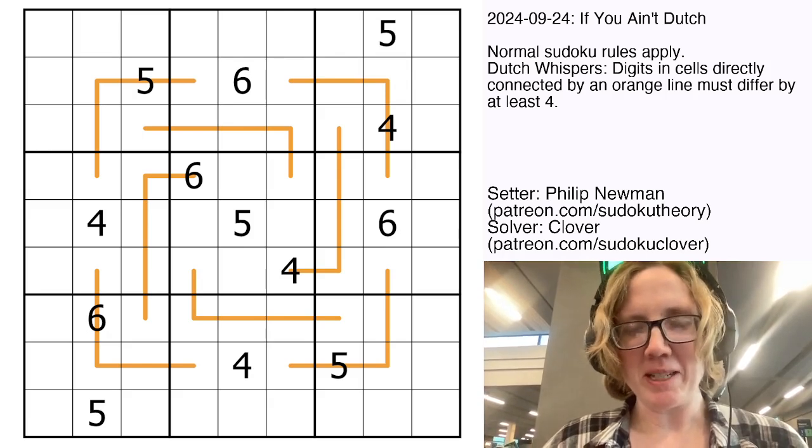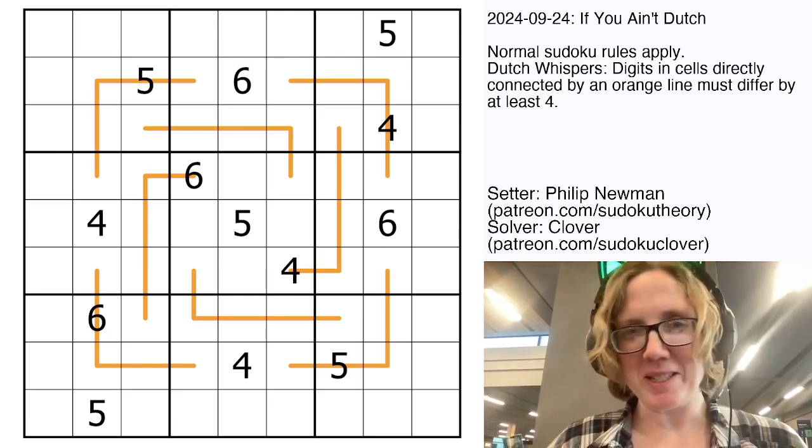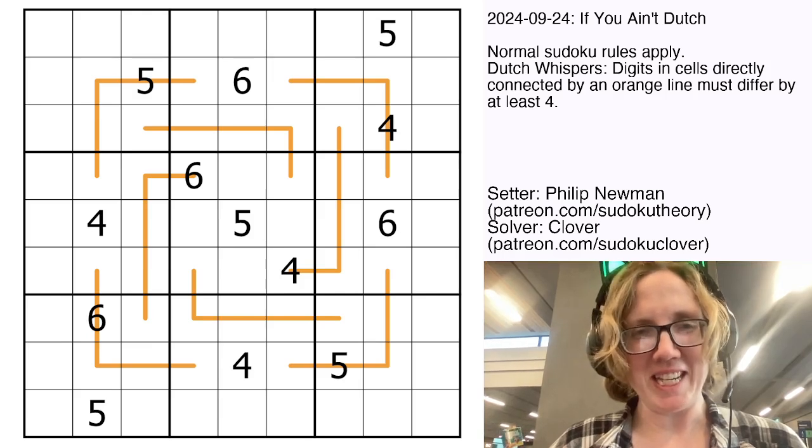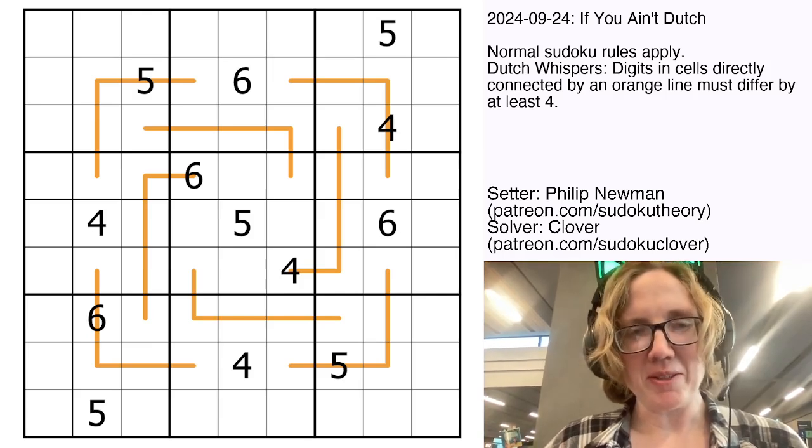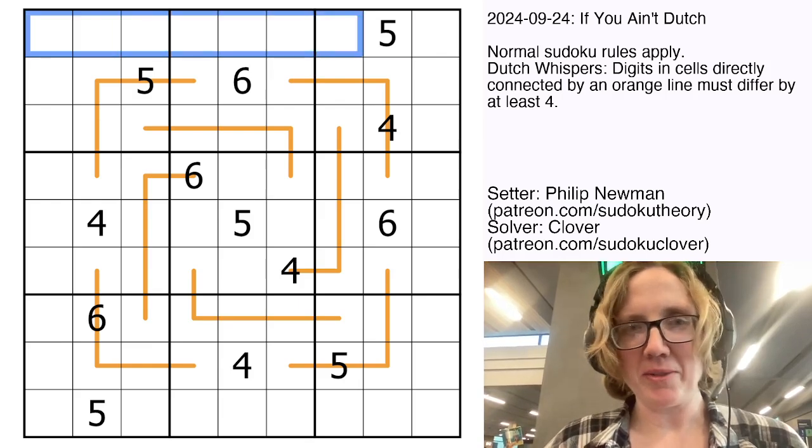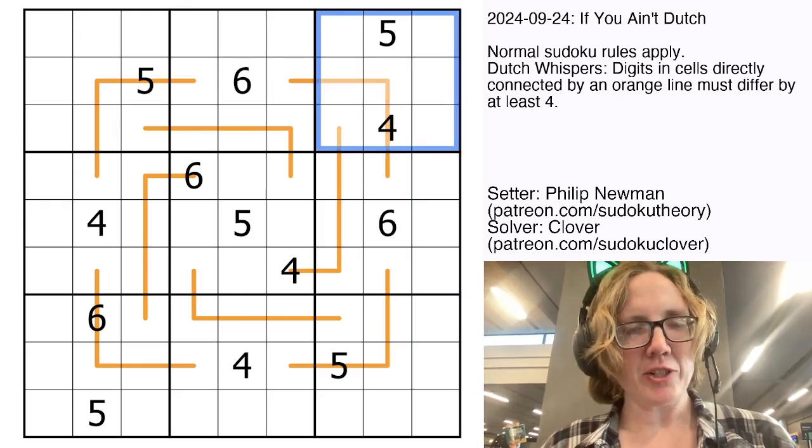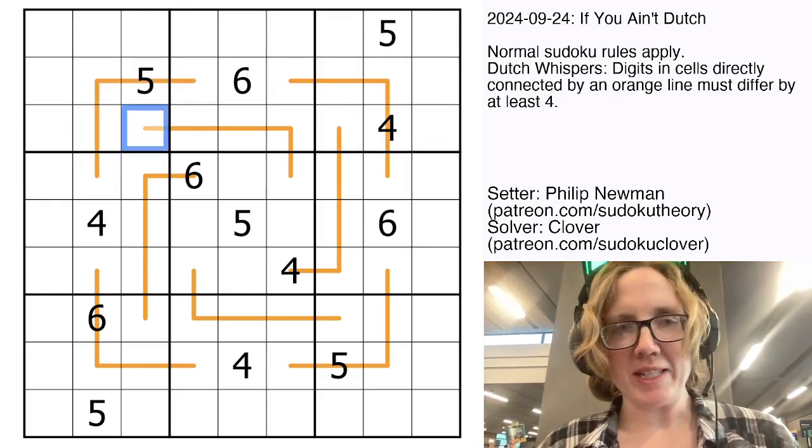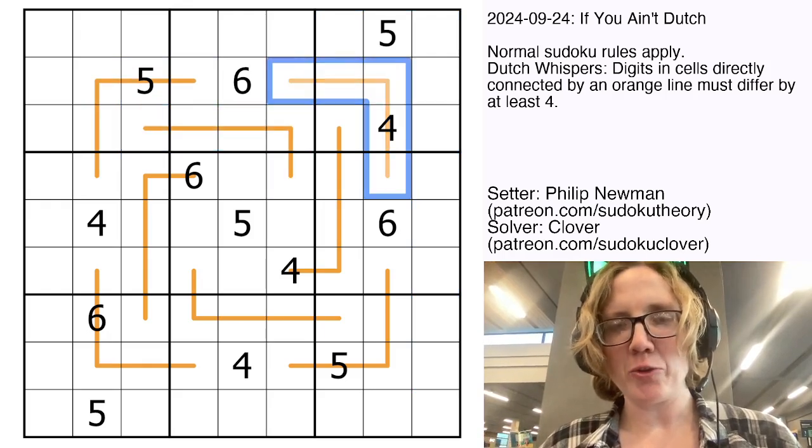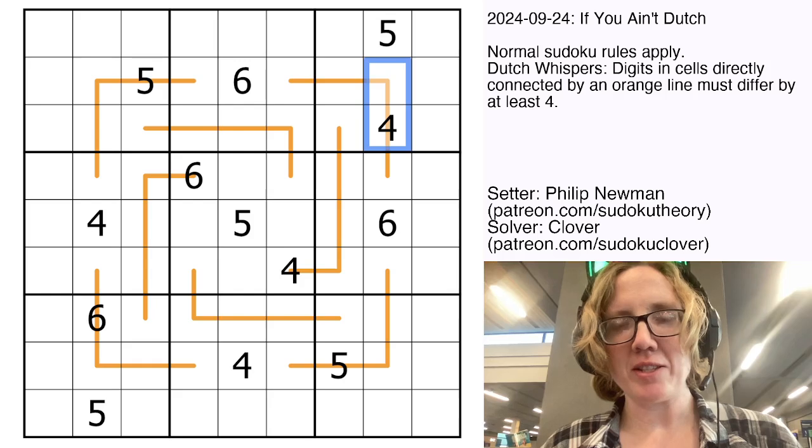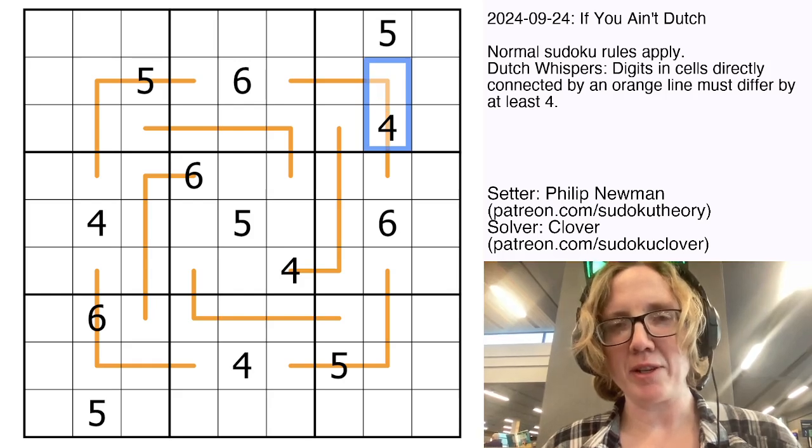I'm going to try to keep this a little bit quick and quiet because I am doing some solving in public today. This is a Dutch Whisper Sudoku. So we place the digits 1 through 9 once each in each row, each column, and each outlined 3x3 region. And in addition to that there are some orange lines in the grid and along each orange line digits that are adjacent to each other have to have a difference of 4 or more.